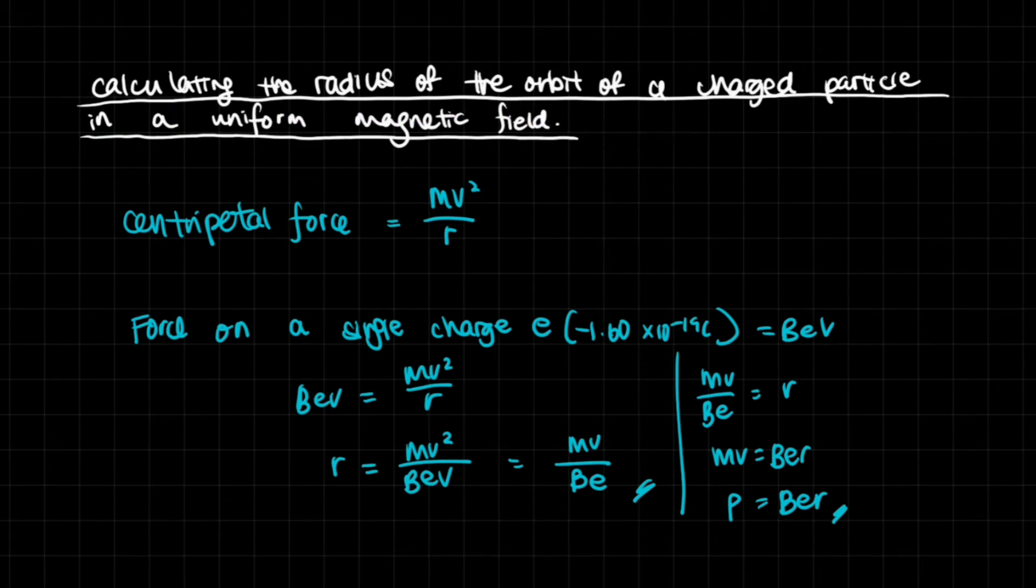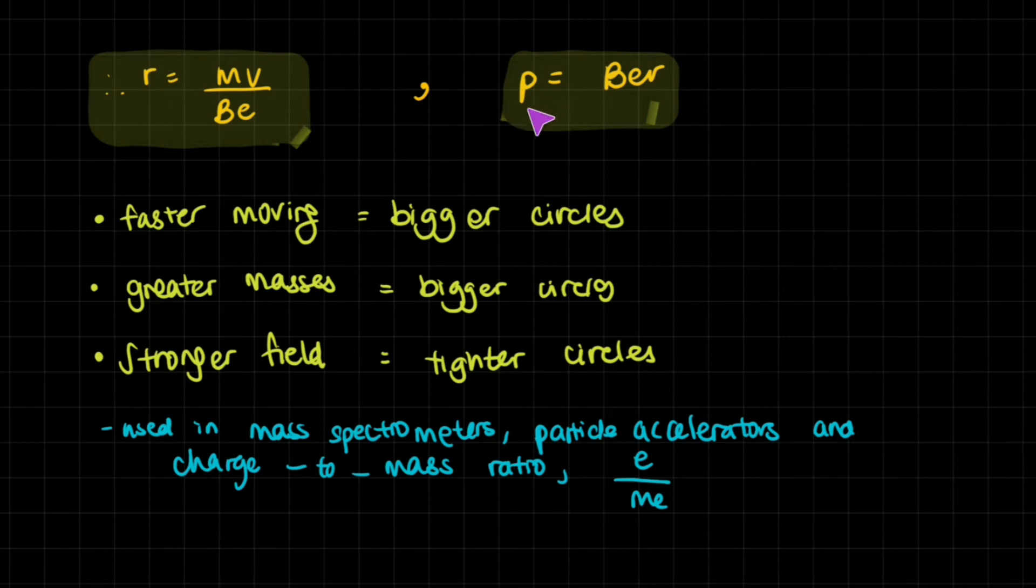We can calculate the radius of the orbit of a charged particle in a uniform magnetic field. We know centripetal force is MV²/R. Force on a single charge E is BEV, which we've covered. So BEV equals MV²/R. We rearrange: R = MV²/BEV. We eliminate the V on both sides and get R = MV/BE. Now, MV is mass times velocity, which is momentum. MV over BE is R, so MV = BER. Therefore, momentum P = BER. We've gained two very useful equations: R = MV/BE and P = BER.